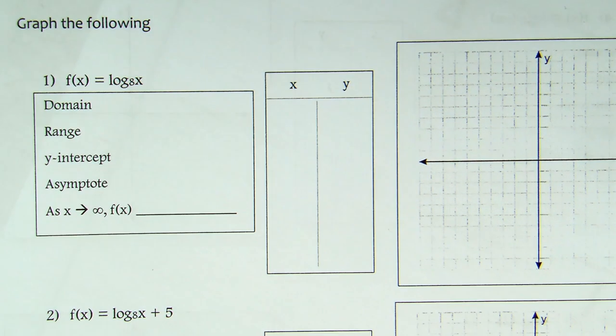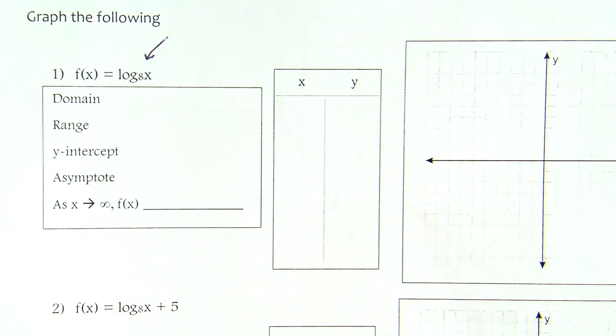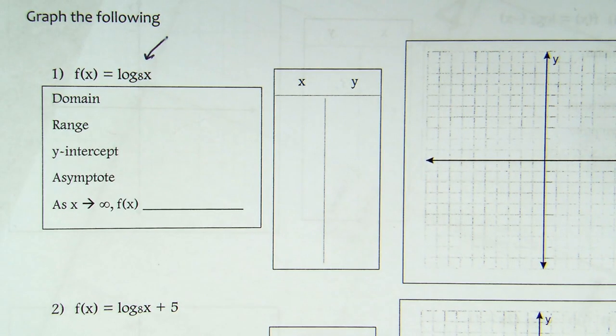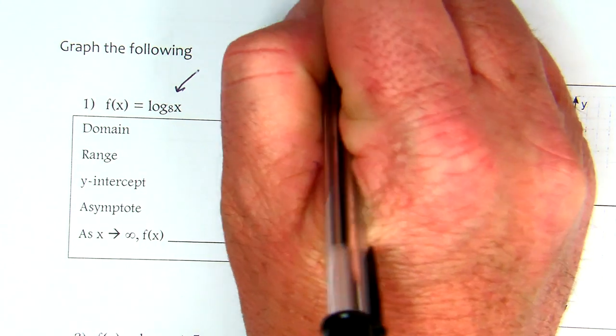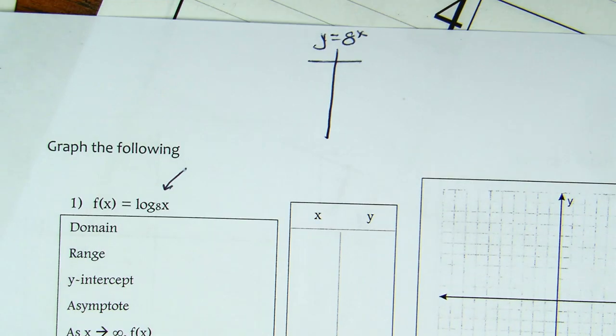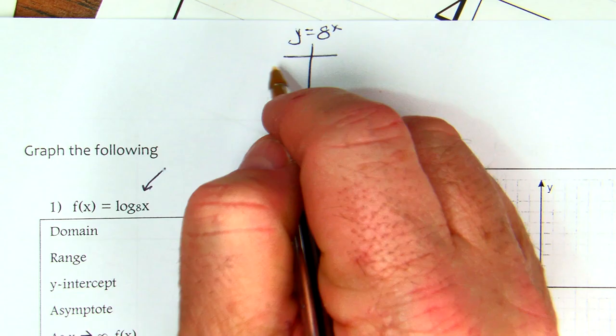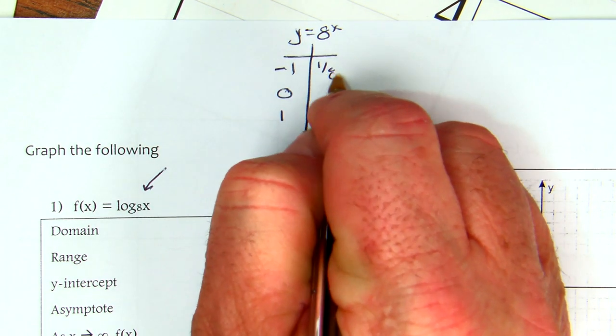All right, this is what we're starting with: f(x) equals log base 8 of x. So all of these are going to have a base of 8, that's going to be the mother function for all of these. We're going to utilize the inverse of y equals 8 to the x. So we have the points: negative 1 over 8, 1 over 8, 0 and 1, and 1 and 8.